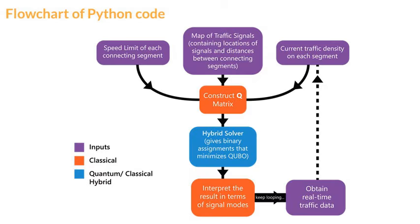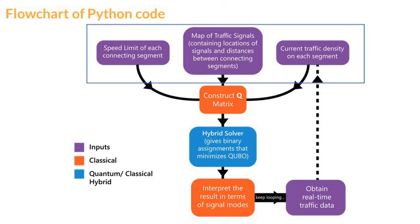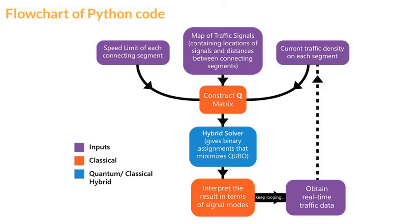This is the workflow of our programmed simulation. Initial information about time, map, and vehicles is fed into the algorithm which then constructs the cost function, the Q matrix. This is then solved using D-Wave's Leap hybrid solver and the result is interpreted in terms of which mode to activate at each intersection. The vehicles then move accordingly inside our simulation which runs on a classical PC. After a fixed amount of time, say 5 seconds, the data is fed into the algorithm again and the whole process repeats.